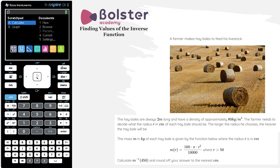It says a farmer makes hay bales to feed his livestock. The hay bales are always two meters long and have a density of approximately 80 kilograms per meter cubed. The farmer needs to decide what the radius r, in centimeters, of each hay bale should be. The larger the radius he chooses, the heavier the hay bale will be. The mass m in kilograms of each hay bale is given by the function m(r) = 160π r² / 10,000, where r is in centimeters and r must be greater than 50.